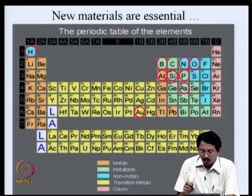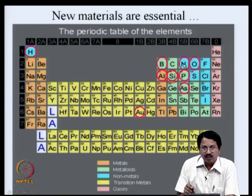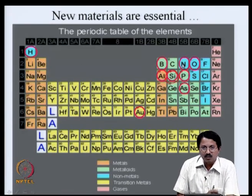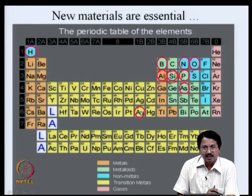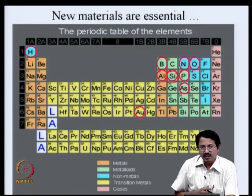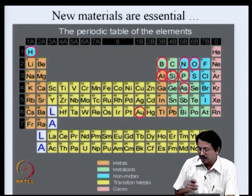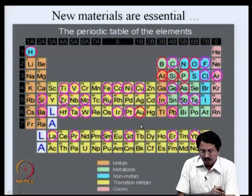Once you complete your chip you passivate it with silicon nitride, so you will also have nitrogen in it. When you put it in a package you will probably have gold wires connecting the silicon pads to the package pins. So this was very simple — just a handful of materials were the ingredients of your silicon chip.